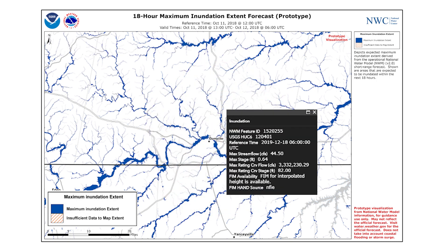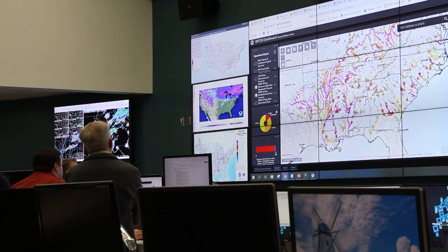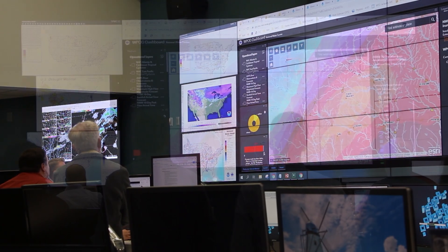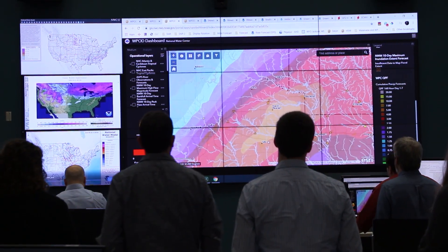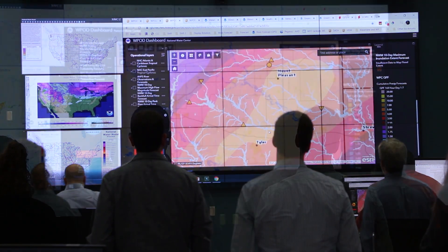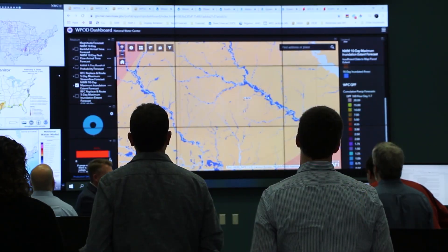Clicking an inundation polygon reveals additional details including the maximum flow and stage in the nearby stream. When used with authoritative datasets and other prepared map layers, we can see where inundation may impact roads, buildings, and other critical infrastructure, as well as vulnerable populations.